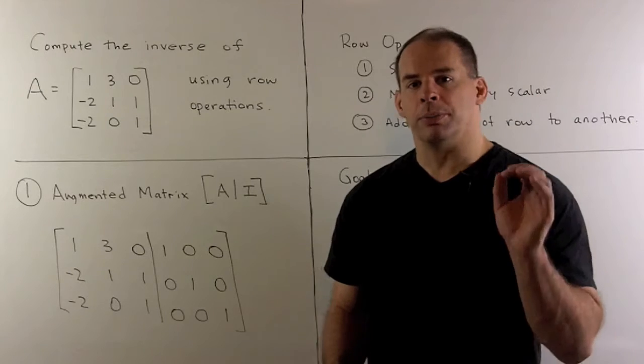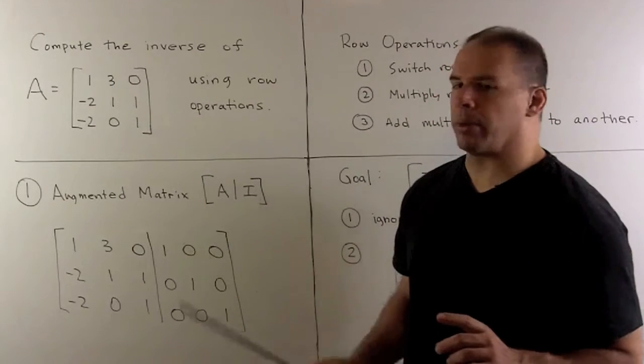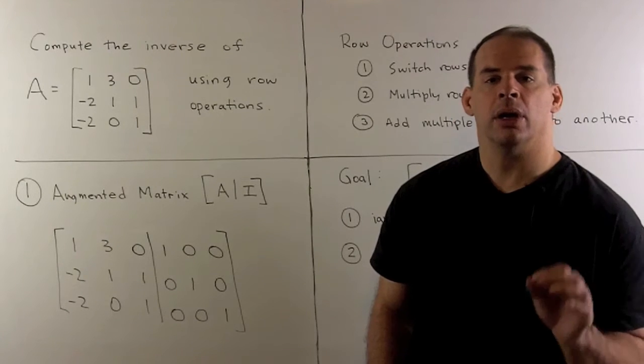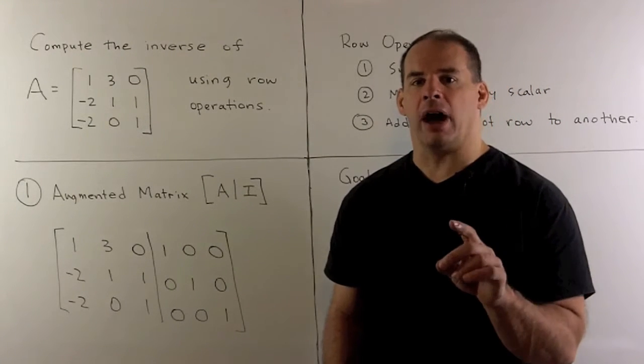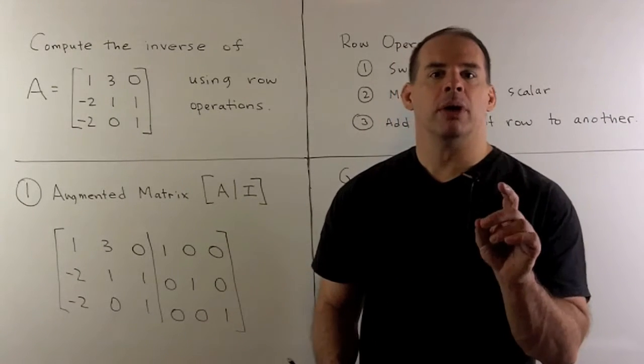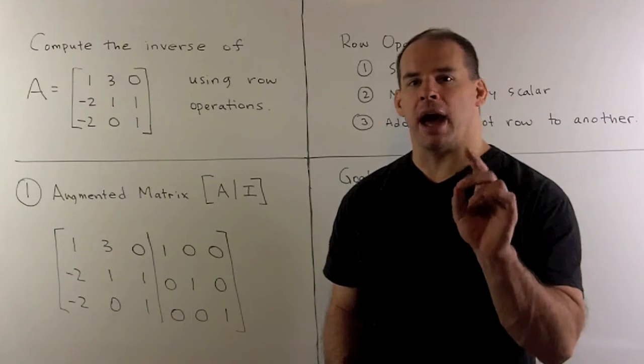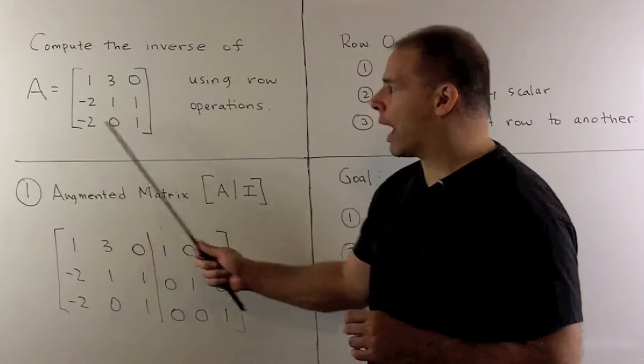Our problem: compute the inverse of the following 3 by 3 matrix A using row operations. We have one example of this type of problem. There, the matrix A consisted of zeros and ones, so the focus was on procedure and not bookkeeping. Here, we're going to give our third row operation a workout.